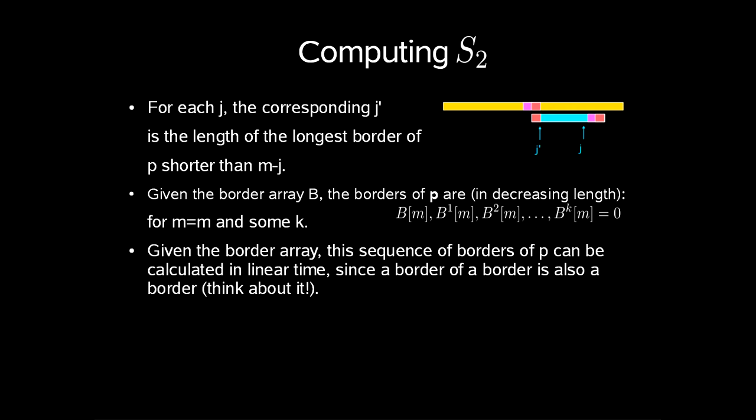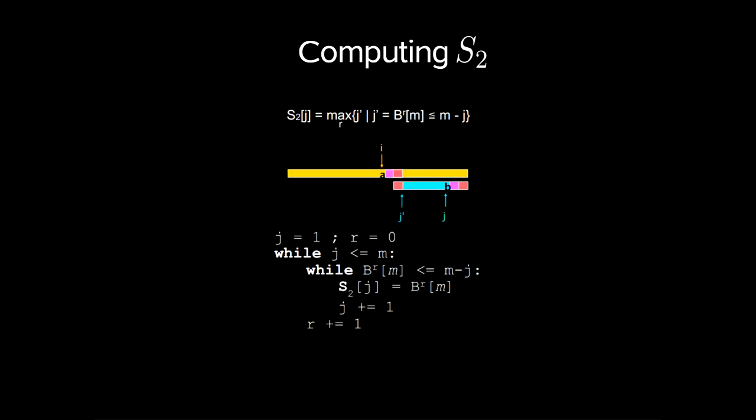The last thing is to compute s2. For each j, the corresponding j prime is the length of the longest border of p shorter than m minus j. Given the border array b, the borders of p are b[m], b[1][m], b[2][m], down to b[k][m], which equals 0, for m being the pattern length and some k. Given the border array, this sequence of borders of p can be calculated in linear time since a border of a border is also a border. So s2[j] is calculated as max for some r of j prime, where j prime is b[r][m] less than or equal to m minus j, or as the pseudo code shown below.